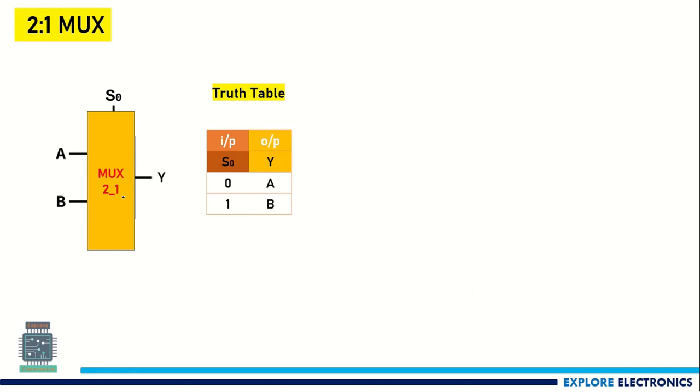A 2-to-1 multiplexer is a combinational circuit having two inputs and one output. With these two inputs A and B, we will have a select line. This multiplexer is called a data selector. Depending on the select line value, the data present at the inputs will be selected at the output. If S0 is equal to 0, the MUX selects input A to output Y. When S0 is equal to 1, B will be selected as output.